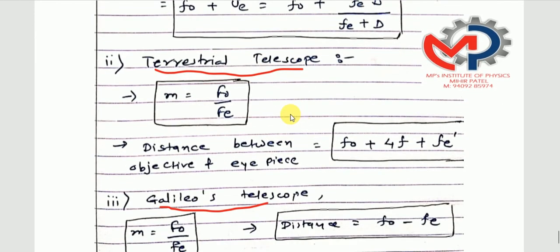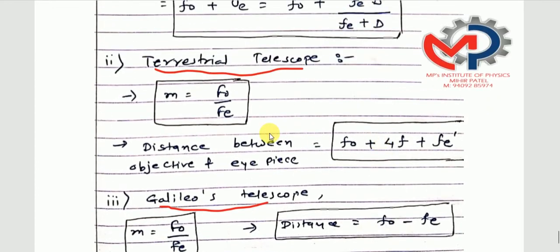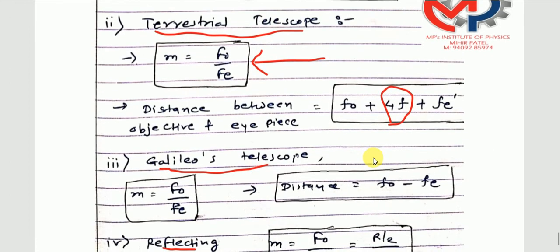For the astronomical telescope, M = fo/fe. Similarly, you can see that for the terrestrial telescope the magnification formula is the same. However, the distance between objective and eyepiece changes — it becomes fo + 4F + fe. This detailed relation was discussed in our module derivation.